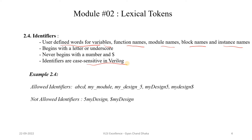Allowed identifiers could be ABCD, my_module, my_design_5, or my_design_dollar. These are all allowed identifiers, but an identifier can never start with a number or a dollar sign. So hopefully that is clear.